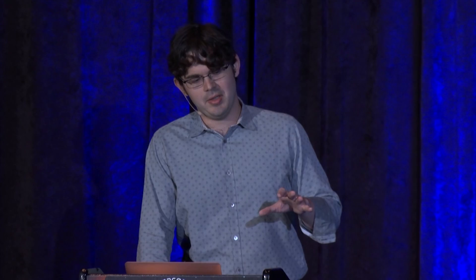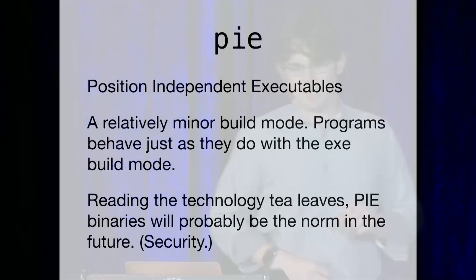Now let's move into one of the new build modes: PIE, position-independent executables. Instead of go build something, you write go build -buildmode=pie something. What comes out is an executable you can run exactly the same way as any other exe — nothing's different to the user experience. But it's kind of fun on the inside.